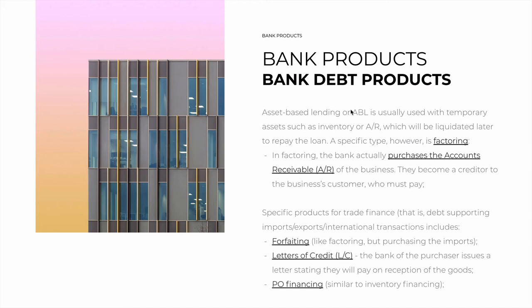ABL is usually used with temporary assets, because they're a perfect match for a type of loan where you have to liquidate the collateral anyway. Out of curiosity, it's also used for investment funds such as venture capital or private equity funds, where the assets used are the portfolio company shares — because they will perform an exit in a couple of years and liquidate their shares at a profit. Those are called NAV facilities, or net asset value facilities. Instead of a company borrowing $100 million with inventory as collateral, it's an investment fund raising $100 million or $1 billion, with portfolio company shares as the temporary asset.